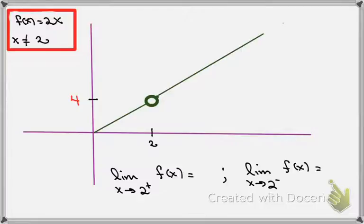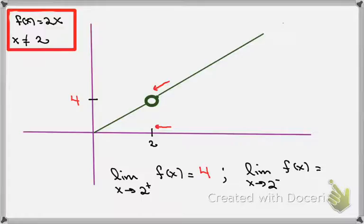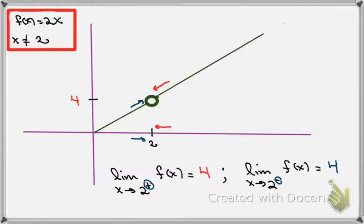Let's consider the limit as x approaches 2 from the right. Approaching 2 from the right, we come in that direction and notice the functional values are getting closer and closer to that open circle, so the limit as I approach 2 from the right is getting closer to 4. The left and right limits are denoted by minus or plus signs. Taking the limit as x approaches 2 from the left, the functional values creep up toward that open circle, and that limit from the left is also 4.